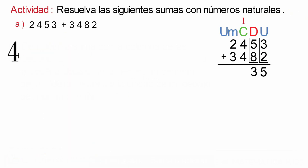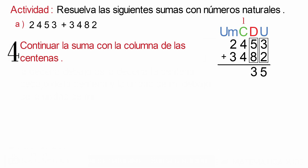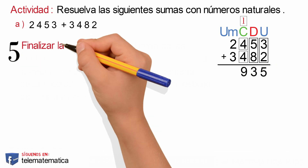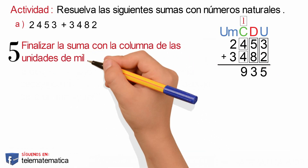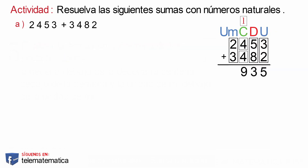Paso número 4: continuar la suma con la columna de las centenas. Sumamos: 1 que llevábamos más 4 es igual a 5, y 5 más 4 es igual a 9. Paso número 5: finalizar la suma con la columna de las unidades de mil. Sumamos: 2 más 3 es igual a 5. Y este resultado lo escribimos en la operación de 2.453 más 3.482.